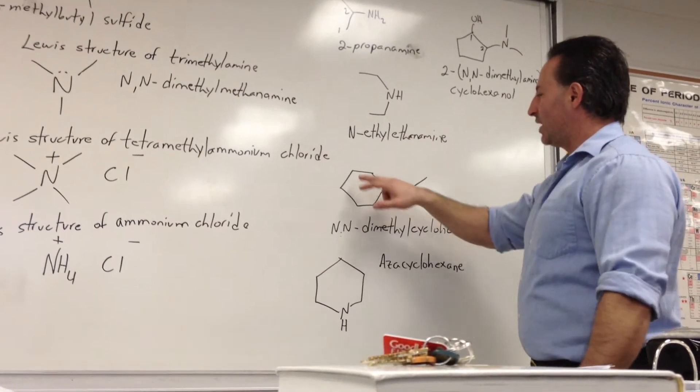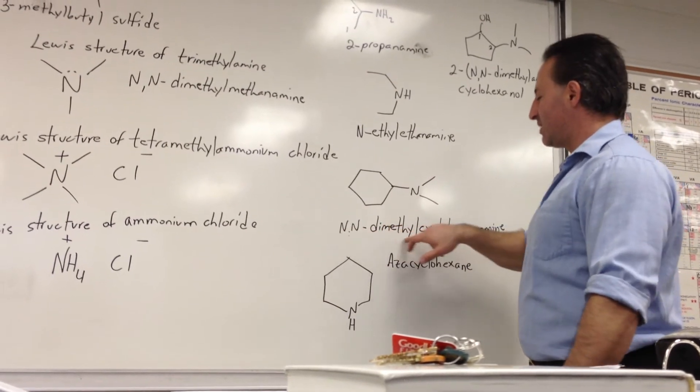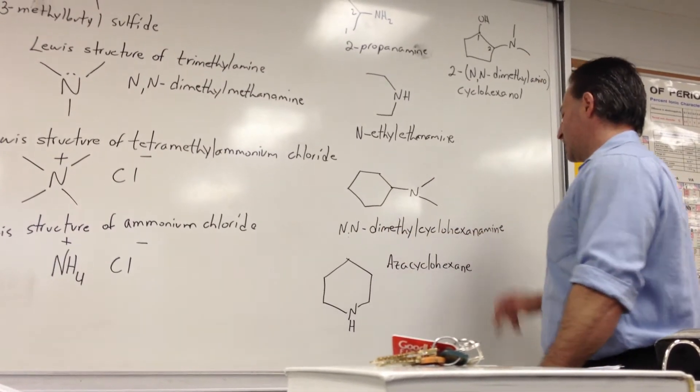Here we have an ethylamine with an ethyl group, so we call it N-ethyl ethylamine. Here we have a cyclohexylamine with two methyl groups, so we say N,N-dimethyl cyclohexanamine.